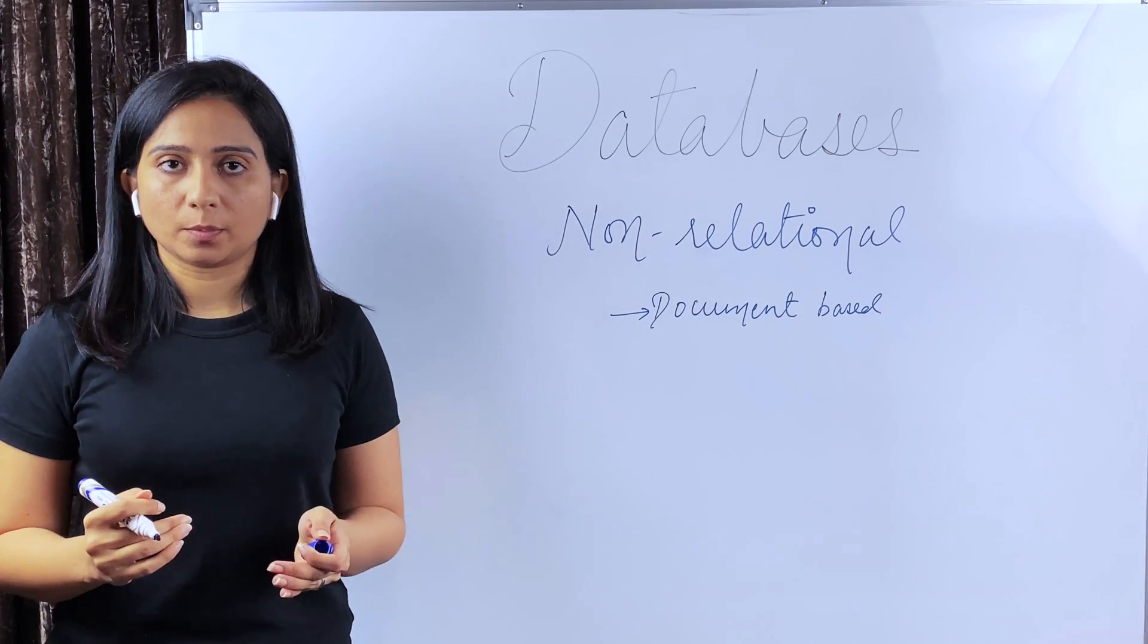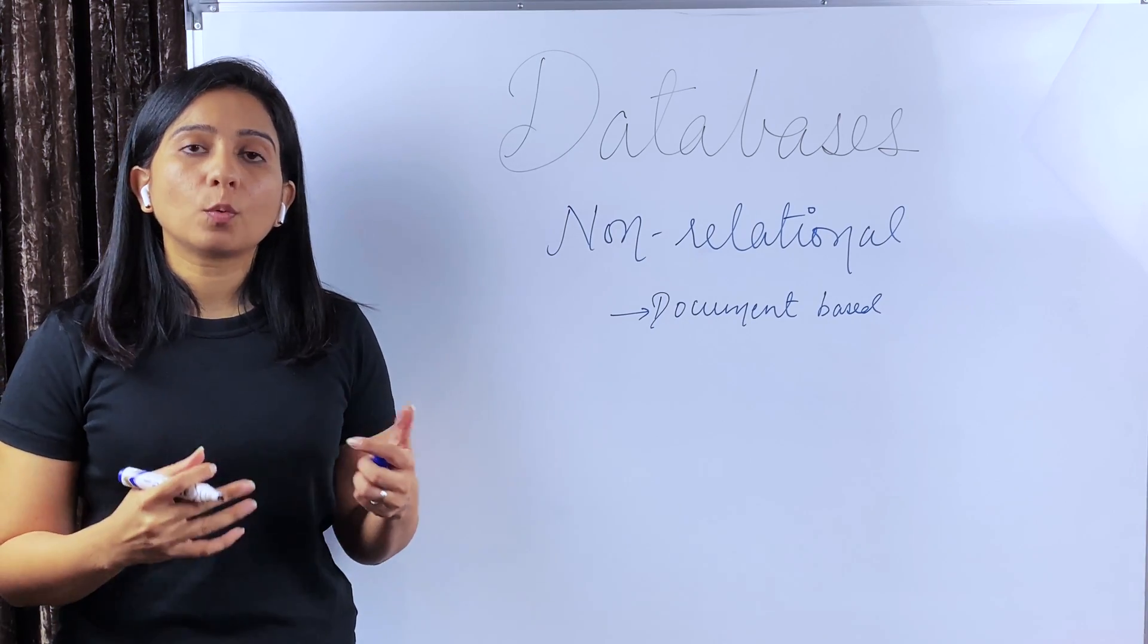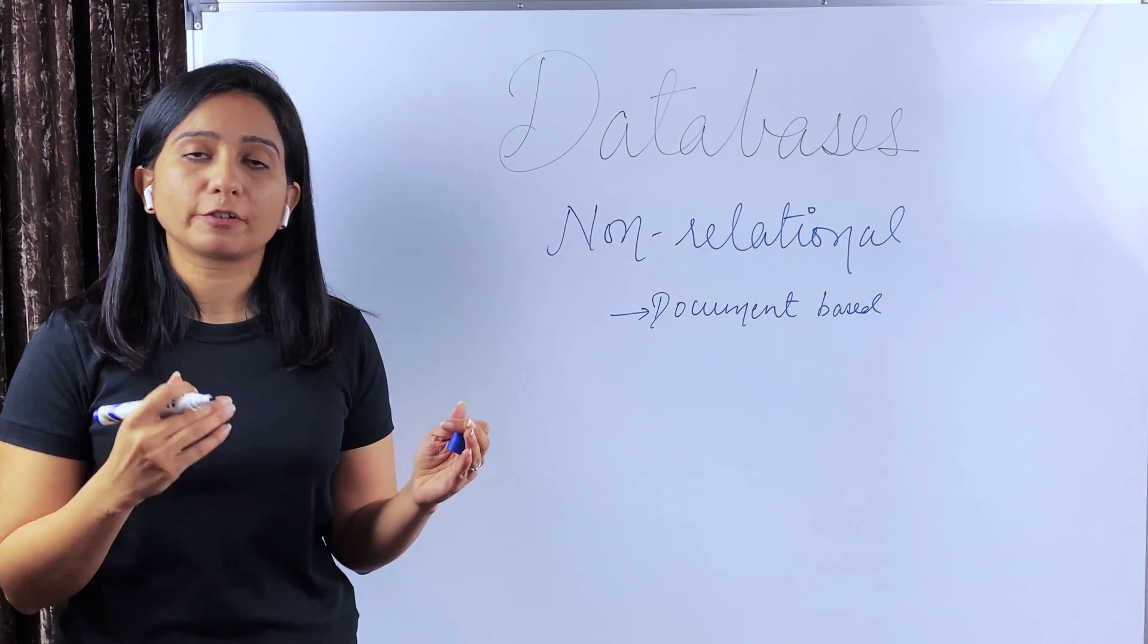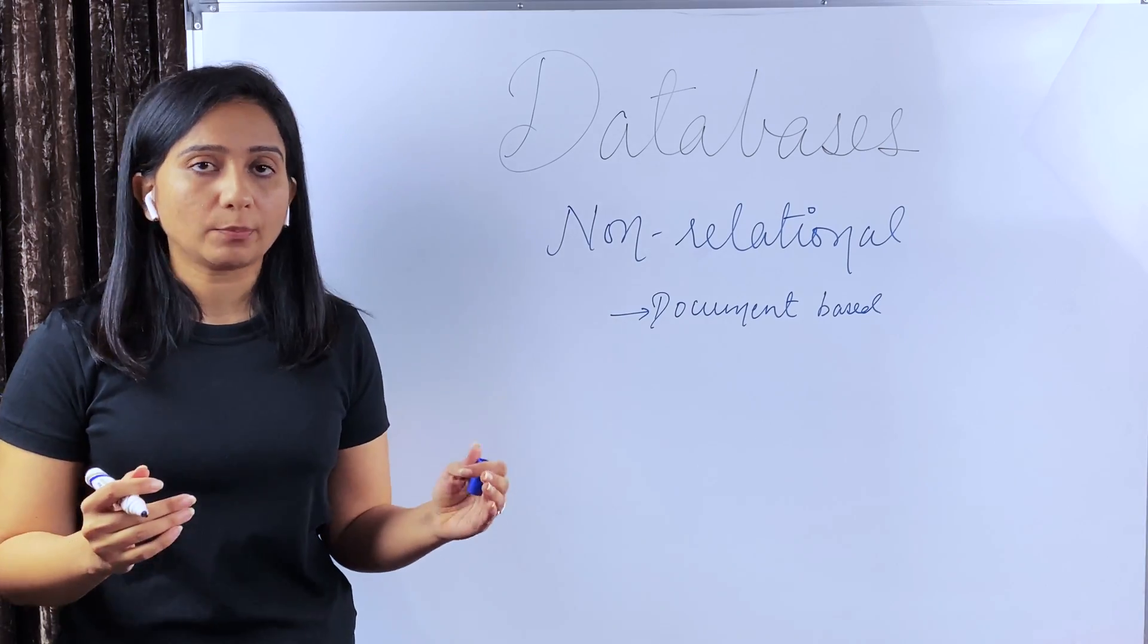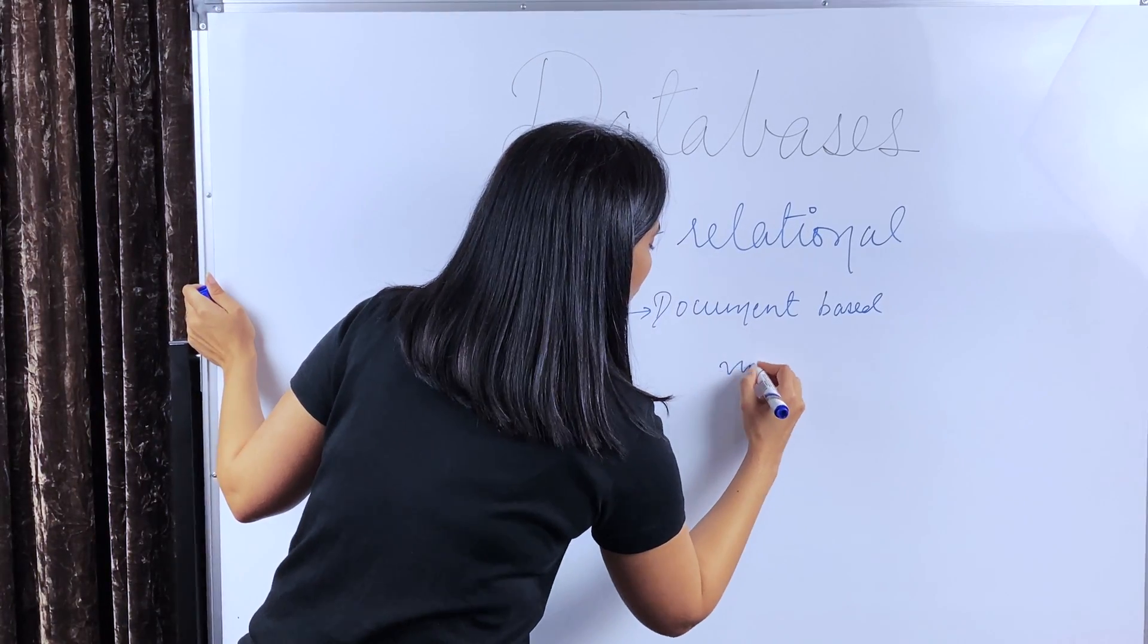Next, let's talk about document based databases. Document based databases are usually used when you are not sure of the schema or how the data and the different fields of data are going to evolve over time. In such cases, document based DBs are used. So there is no fixed schema.